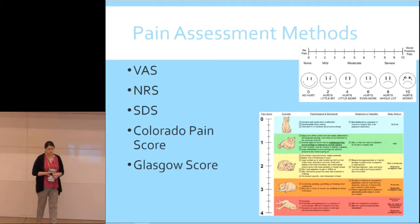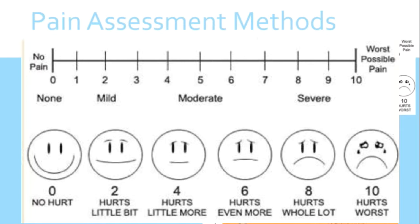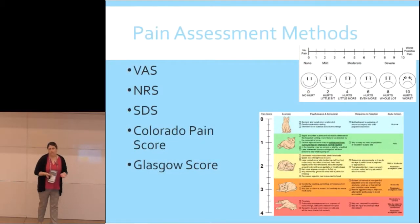Use a standardized scoring system — it doesn't really matter which one. The VAS is a visual analog score most commonly used in people: basically happy face to sad face. A numerical rating scale from 0–10 is relatively accurate if one or two trained people use it consistently. The Colorado Pain Score has pictures and descriptions — I call it the 'sad kitty scale' for cats — and is increasingly widely used for both dogs and cats.